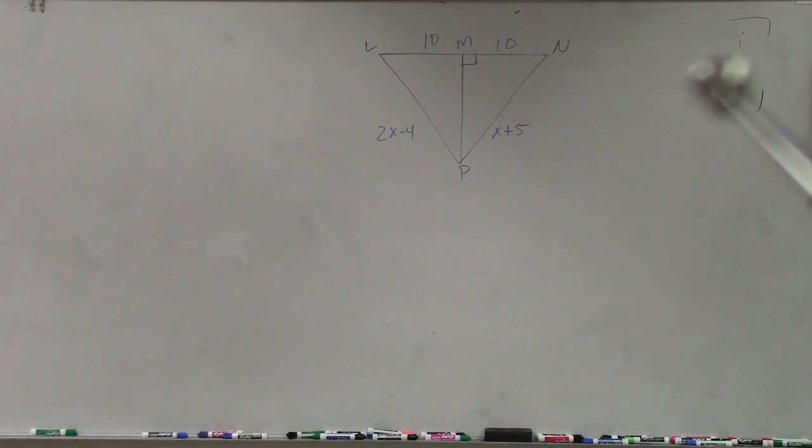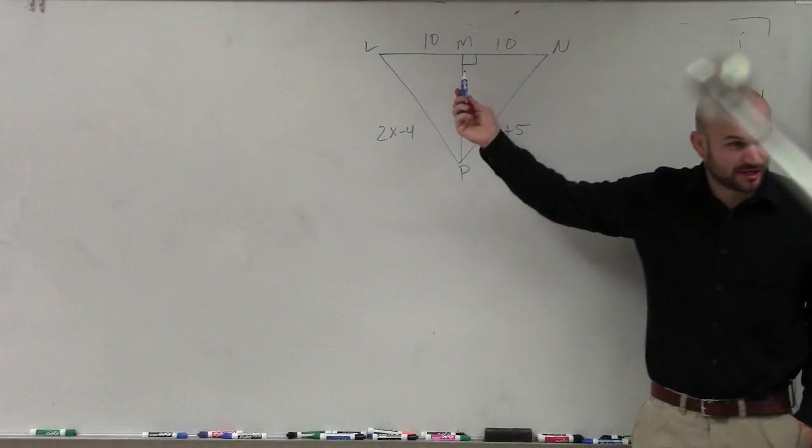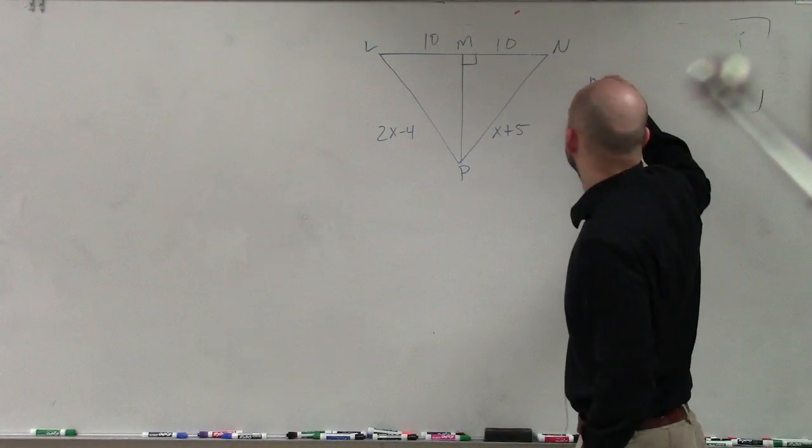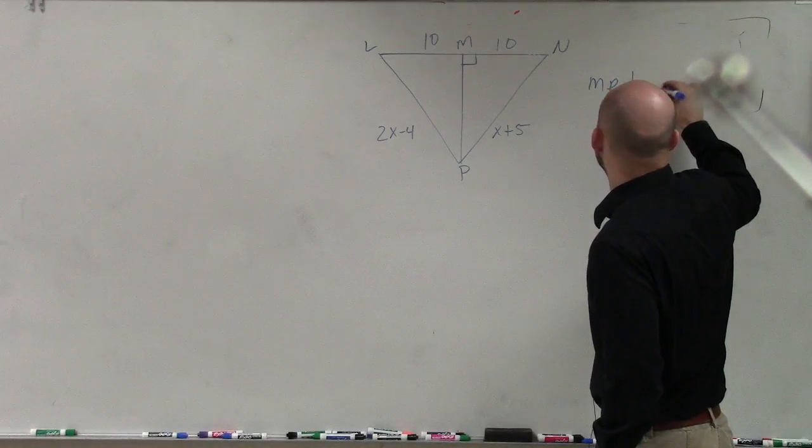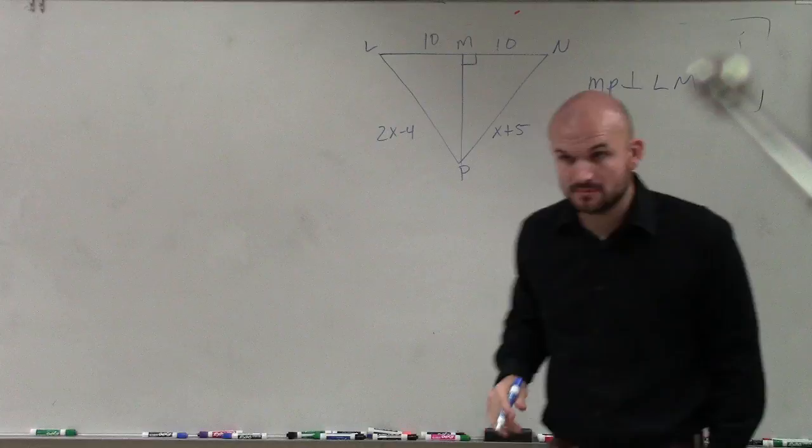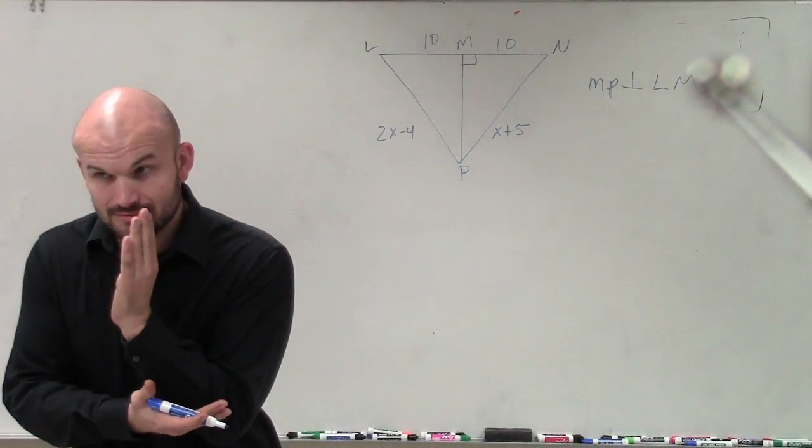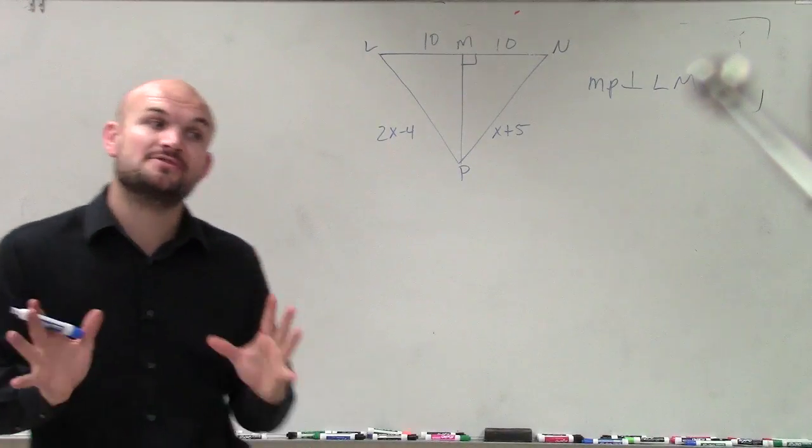Let's talk about this. So on this problem, what you notice is we have a perpendicular line. This line mp, you don't have to write this down, but mp is perpendicular to the line lm. So we have a line that is perpendicular to another line. This is very important because this is the definition we've already gone over that I want to make sure you guys remember.